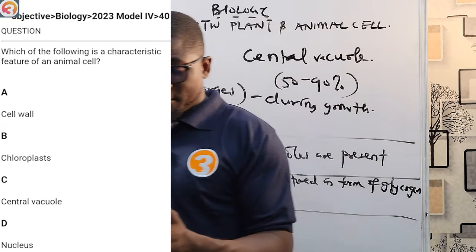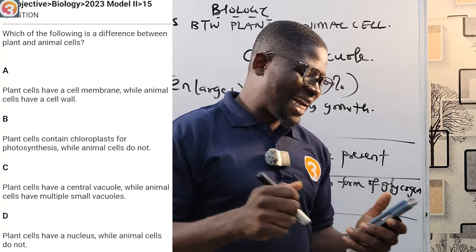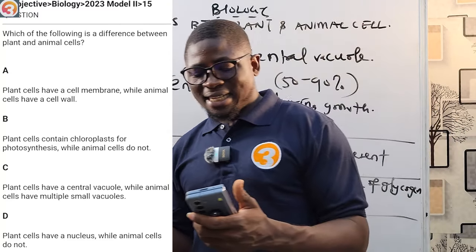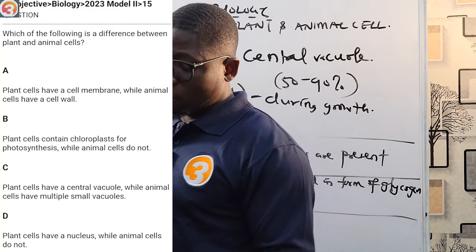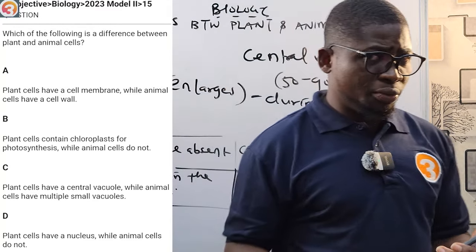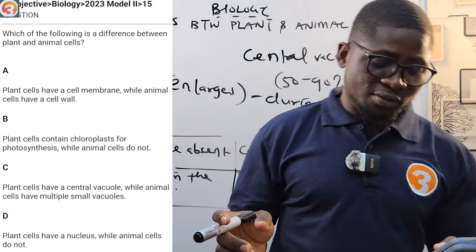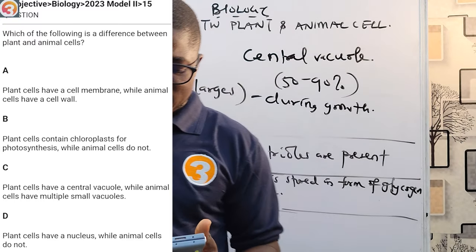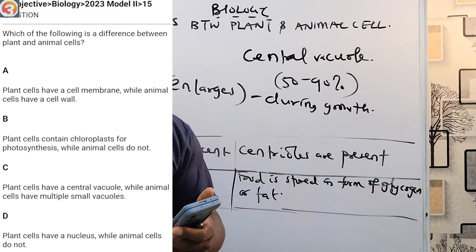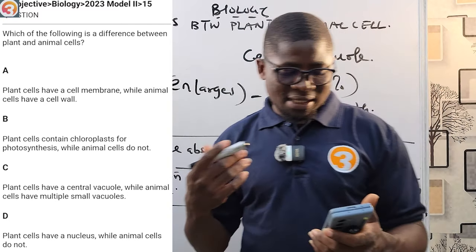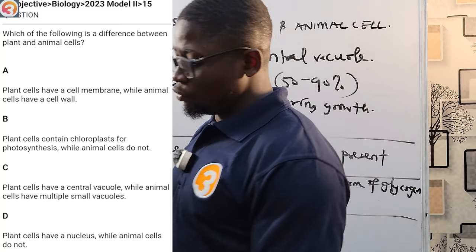Next, 2023 question number 15: which of the following is a difference between plant and animal cells? A: plant cells have a cell membrane while animal cells have a cell wall — wrong, cell walls are only in plant cells. B: plant cells contain chloroplasts for photosynthesis while animal cells do not — correct, animal cells do not have chloroplasts and do not photosynthesize. C: plant cells have a central vacuole while animal cells have multiple small vacuoles — wrong. D: plant cells have a nucleus while animal cells do not — wrong. The answer is B.